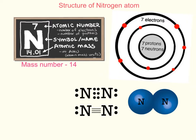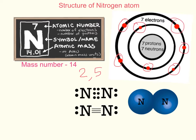Now let's look at the structure of the nitrogen atom. The atomic number 7 indicates that nitrogen has seven protons in the nucleus. Since every atom is electrically neutral, nitrogen has seven electrons whirling about outside of the nucleus. Nitrogen's electron configuration is 2, 5 — since it has two electrons in the first shell and five electrons in the outer shell, or valence shell. Therefore nitrogen has five valence electrons. Nitrogen also has seven neutrons in the nucleus.